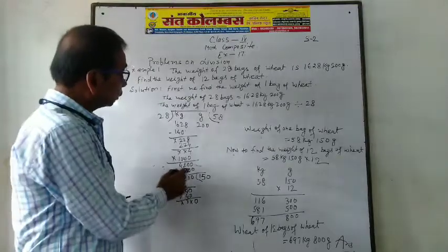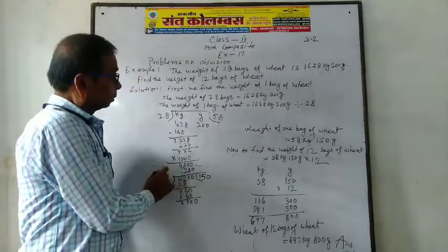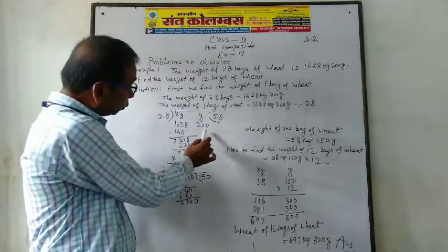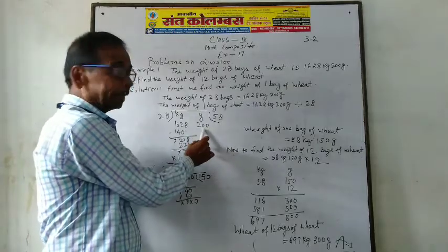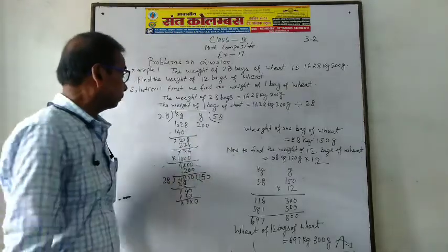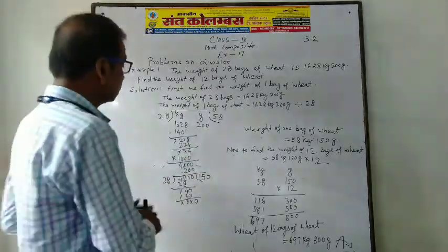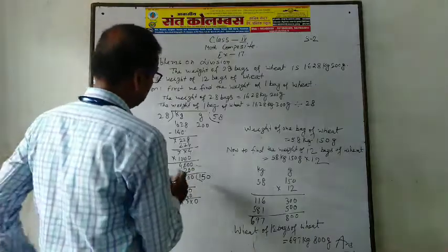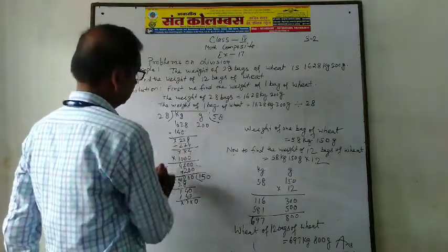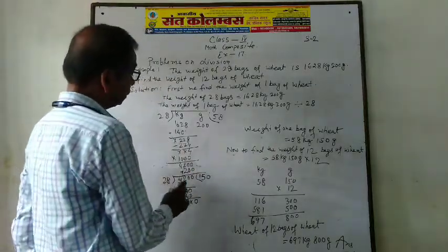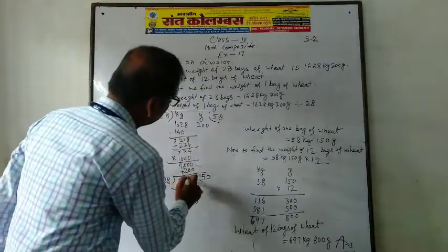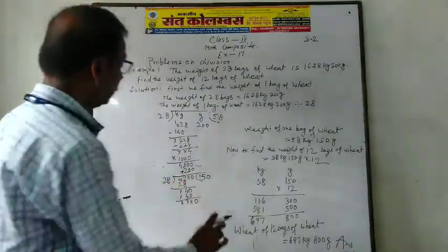The result is 4,000 and 200 grams, so 4,000 plus 200 is equal to 4,200.